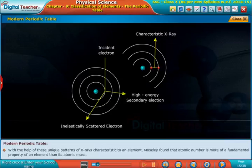With the help of these unique patterns of X-rays characteristic to an element, Moseley found that atomic number is more of a fundamental property of an element than its atomic mass.